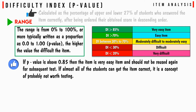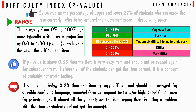If the p-value is above 0.85, the item is very easy and should not be reused in subsequent tests, as almost all students can get it correct — it is probably not worth testing. If the p-value is below 0.20, the item is very difficult and should be reviewed for possibly confusing language, removed from subsequent tests, and highlighted as an area for re-instruction, since almost all students got it wrong.